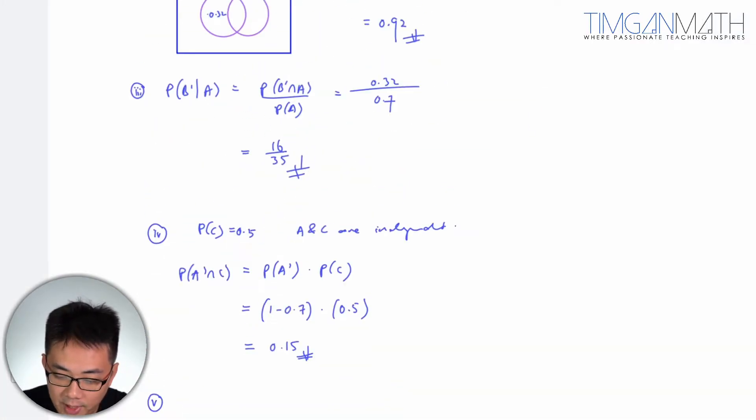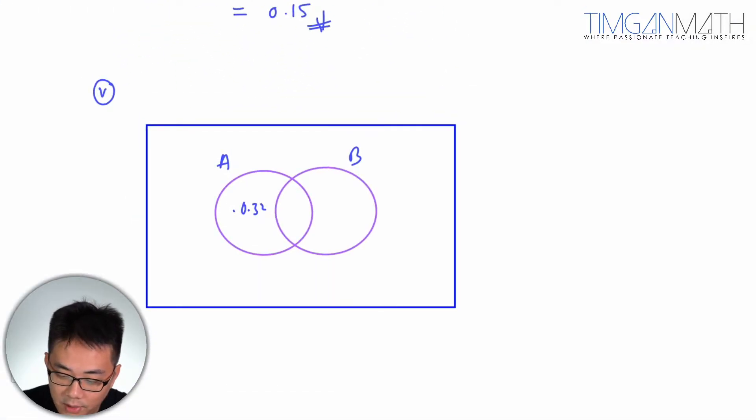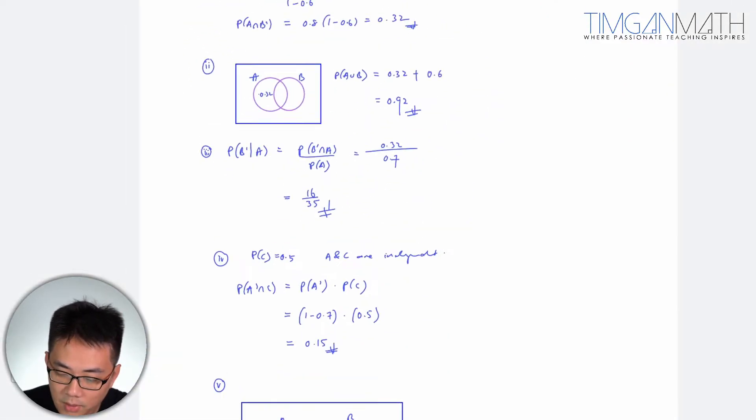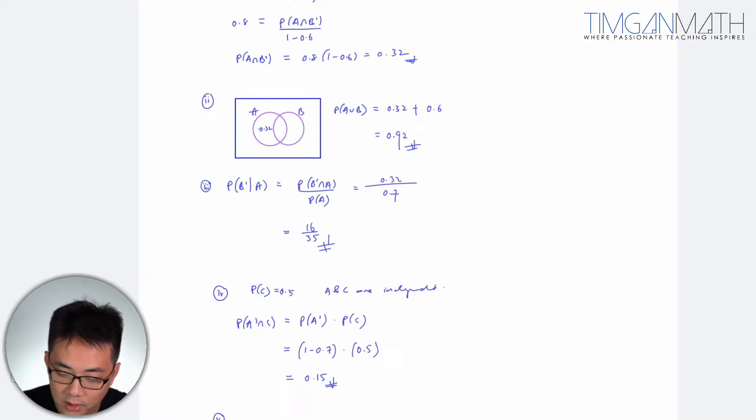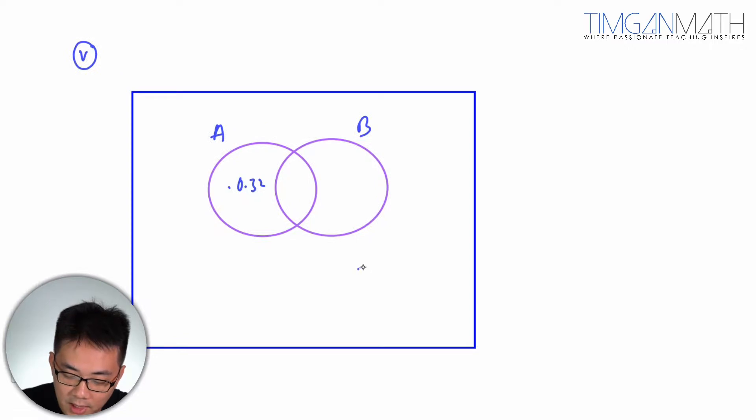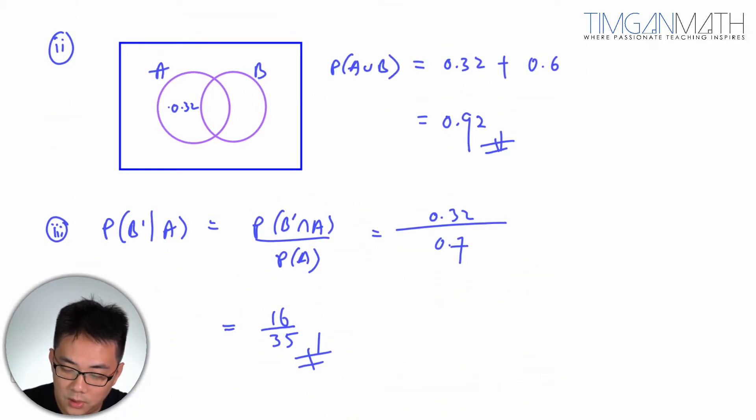And if I want to find A intersect B, let me see. So now I draw out C. But A union B is actually 0.92, so outside here will be 0.08 because A union B is 0.92. I just take 1 minus 0.92 here. So outside here is 0.08, just take note on that.